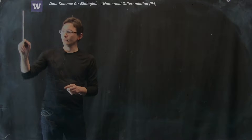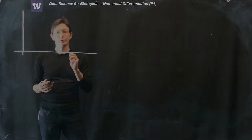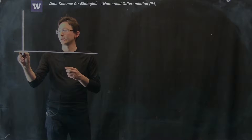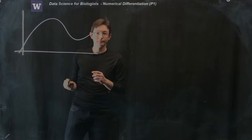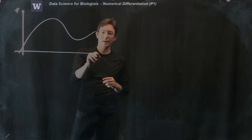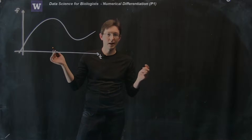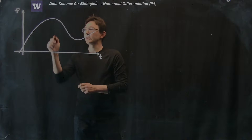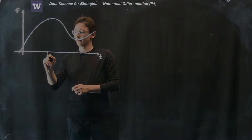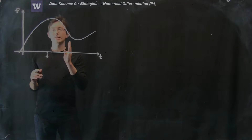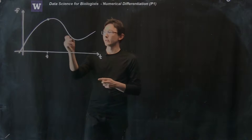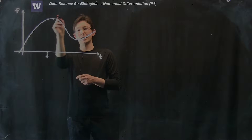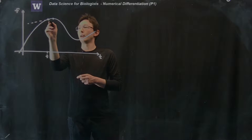In a normal calculus class, you learn about the derivative as the rate of change of a function, either in time or in space, and you can think about this as the slope of a tangent line. So let's say f is a function of t — a function of time. I want to know the rate of change of this function at a given point t. I'll take a point either directly to the right or directly to the left and approximate the slope of the tangent line using the slope of the line connecting those two points.